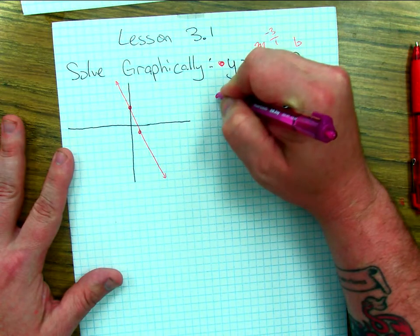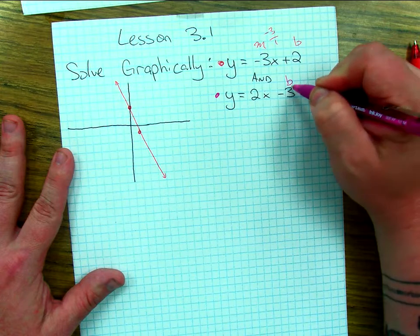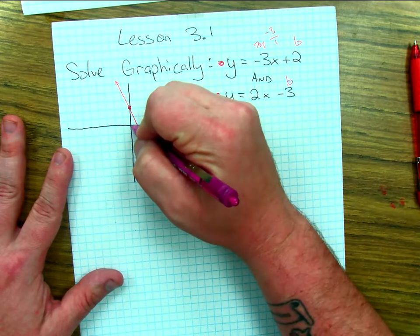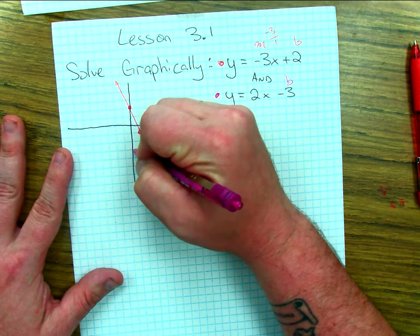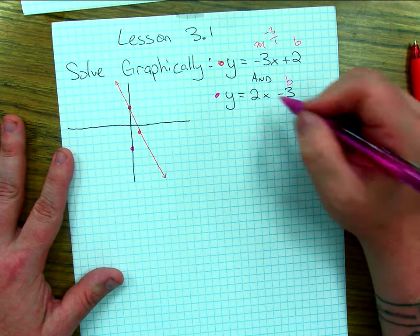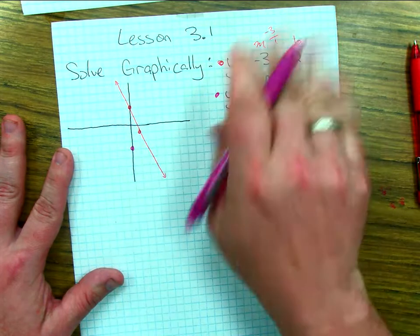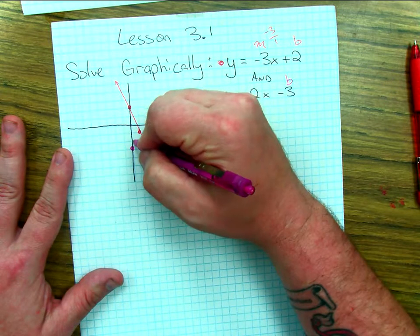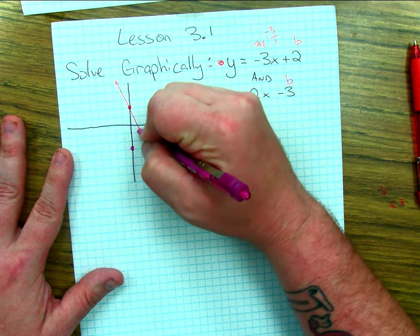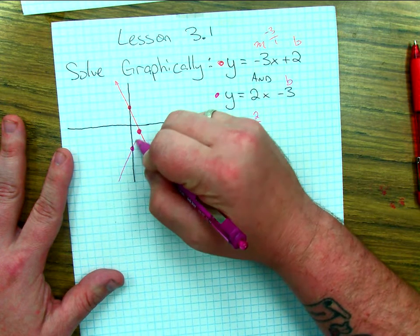The second line is the one that we have here. If we look at this one, it has a y-intercept of negative 3. So I'm going to count down 1, 2, 3. And it has a slope of 2, which we know means 2 over 1. It's a positive slope. It's going to be one that rises. We're going to go up 1, 2, and over 1. And it's pretty obvious what our common point is already, but let's go ahead and graph it anyways.